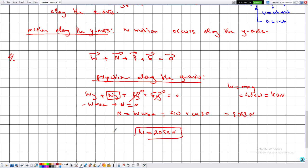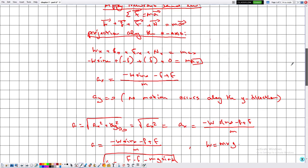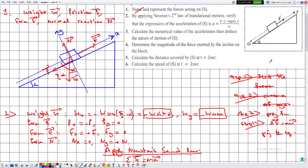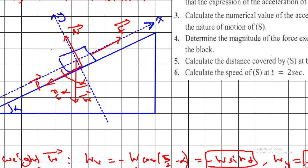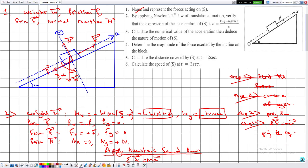Although there is a force acting in the y direction, it is cancelled by the component W cos alpha, so the net force along y is zero and no motion occurs along the y axis. This does not mean S is in equilibrium — motion still occurs along the x axis.